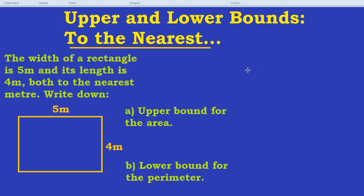Find something to the nearest mile, round something to the nearest pound, that kind of thing. A typical question would be something like this. The width of a rectangle is 5 metres, and its length is 4 metres, both to the nearest metre. Write down an upper bound for the area, and a lower bound for the perimeter.